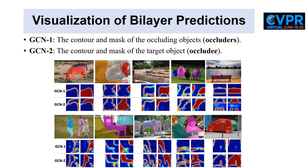The squared heatmap visualizes the contour and mask predictions by the two GCN layers for the occluder and occluded instance in the same ROI region specified by the red bounding box, where GCN1 detects occluding regions while GCN2 models the partially occluded instance. The bilayer modeling also makes our BCNET more explainable than previous methods.